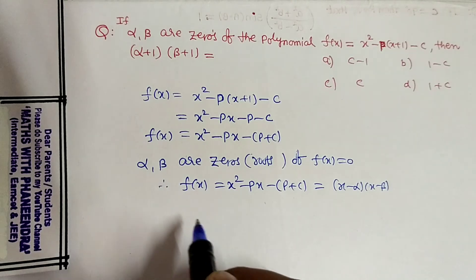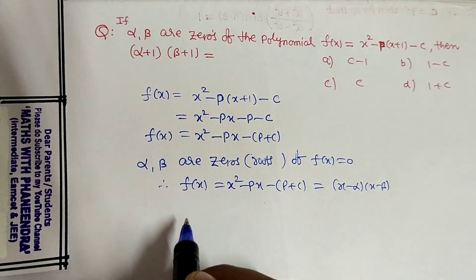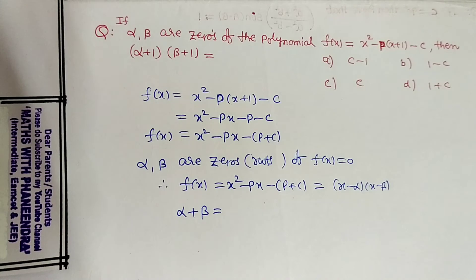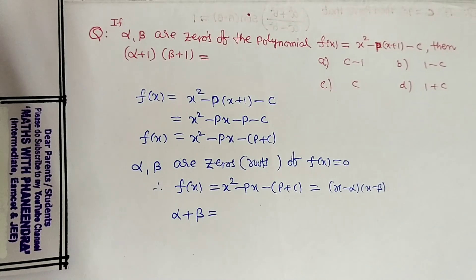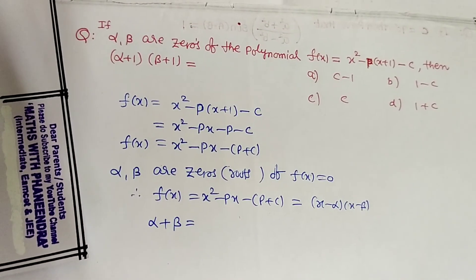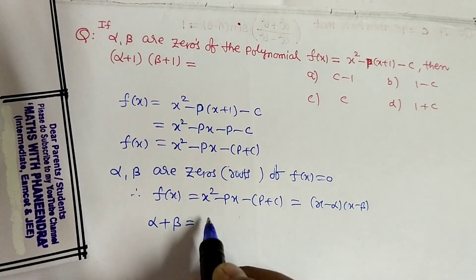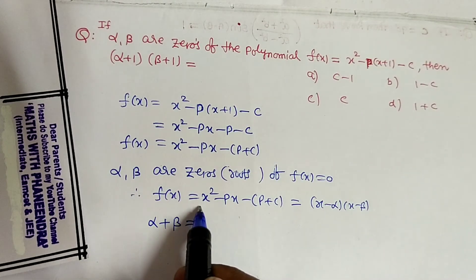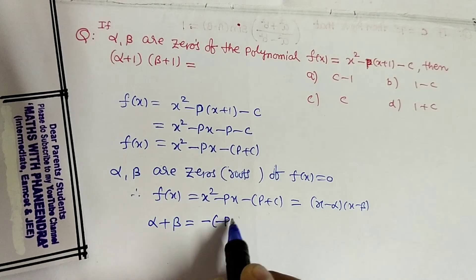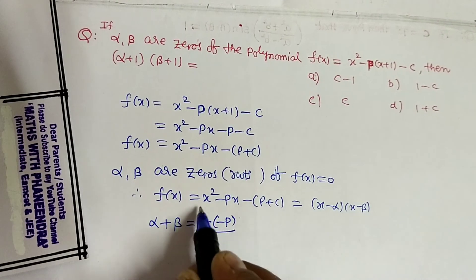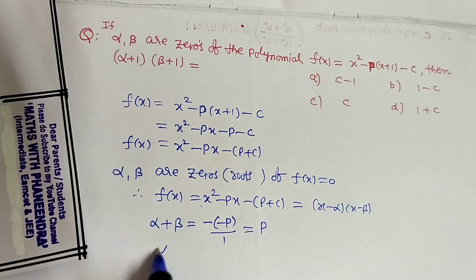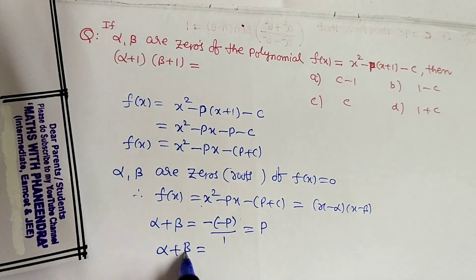From this we get the sum of the roots and product of the roots. Alpha plus beta equals minus b by a. Comparing with a x squared plus b x plus c, minus b by a means minus of minus p, and a value is 1. So alpha plus beta is equal to p.